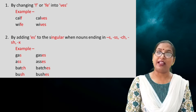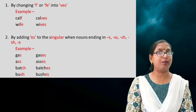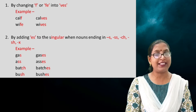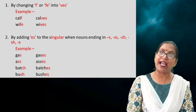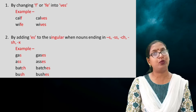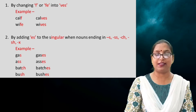And the last example: 'box' — B-O-X, ending with X. So we add ES with it to get the plural form: 'boxes'.